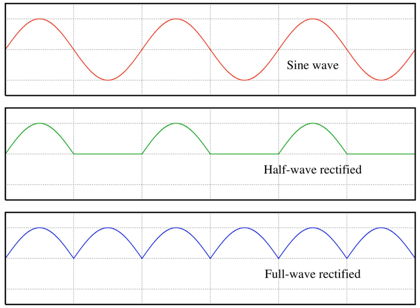For example, when a violin string is displaced, transverse waves propagate out to where the string is held in place at the bridge and the nut, where the waves are reflected back. At the bridge and nut, the two opposed waves are in antiphase and cancel each other, producing a node. Halfway between two nodes there is an antinode, where the two counter-propagating waves enhance each other maximally. There is no net propagation of energy over time.